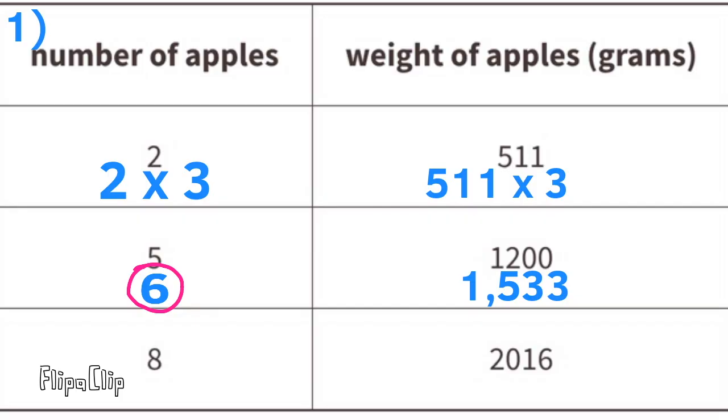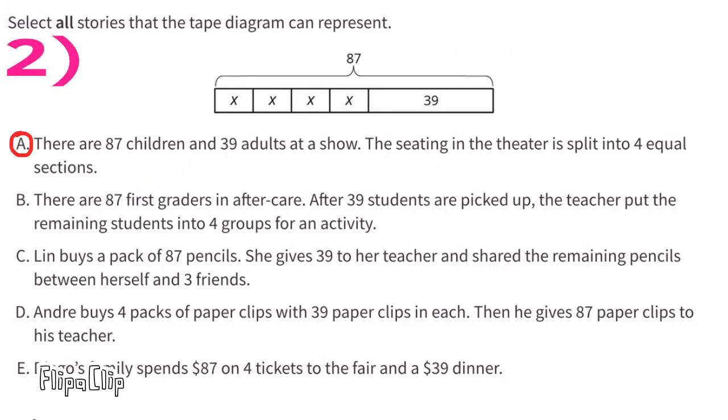Number two: select all the stories that the tape diagram can represent. A: there are 87 children and 39 adults at the show. The seating in the theater is split into four equal sections. That doesn't work.